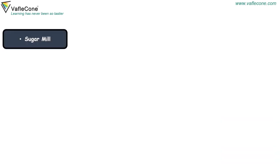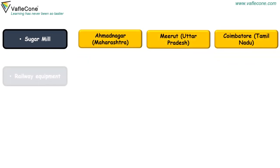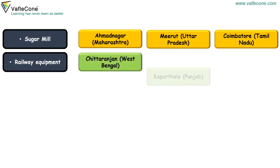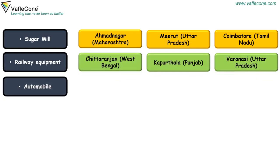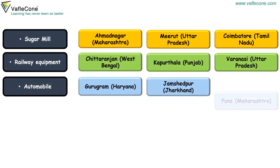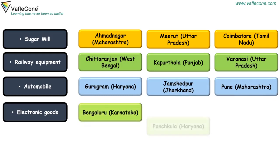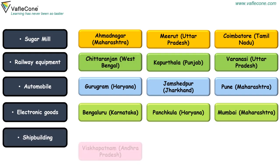Sugar Mill is located in Ahmednagar, Meerut, and Coimbatore. Railway equipment is located in Chittaranjan, Kapurthala, and Varanasi. Automobile industry is located in Gurugram, Jamshedpur, and Pune. Electronic goods are produced in Bengaluru, Panchkula, and Mumbai. Ship building is located in Visakhapatnam, Kochi, and Marmagao.